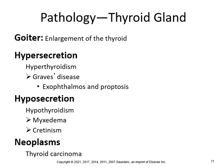What are some pathological conditions? You could have a goiter, which is enlargement of the thyroid. Hypersecretion — hyperthyroidism can lead to Graves' disease, exophthalmos, and proptosis. Hyposecretion can lead to hypothyroidism, myxedema, and cretinism. Neoplasms include thyroid carcinoma. Hypothyroidism usually causes fatigue, muscular and mental sluggishness, weight gain, fluid retention, slow heart rate, low body temperature, and constipation. Hyperthyroidism is the other way — usually lots of energy, typically thin, with a fast heart rate.